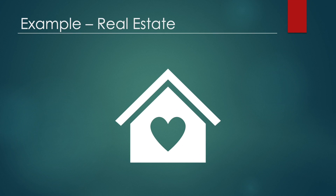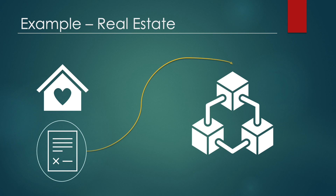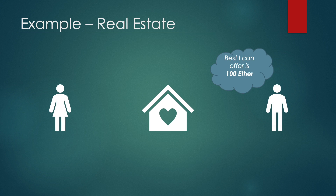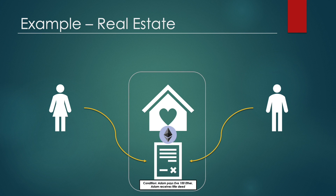Smart contracts can also be used in real estate. Let's say that Eve took the house she's living in and put the deed on the blockchain. It's not owned by Eve anymore nor the bank that hosts the mortgage. In fact, it's owned by whoever owns the deed in the blockchain. Now let's say that Adam offers to purchase Eve's house for 100 Ether and Eve accepts it. The agreement is formed on the Ethereum blockchain using a smart contract. In the simplest terms, the agreement will look like this: when Adam pays Eve 100 Ether, then Adam will receive the ownership — the title deed — of the house.